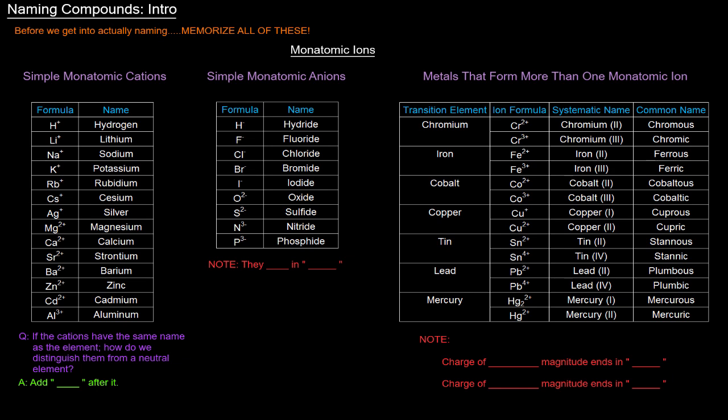So we'll start off with the monatomic ions, specifically the monatomic cations. Now, monatomic means one atom, cations means positive charge. We've got the first few here from H down to Cs. Those are all of the group one elements, and they all form a plus one charge because they want to reach that noble gas configuration. They have one extra electron that if they lose, boom, noble gas configuration.